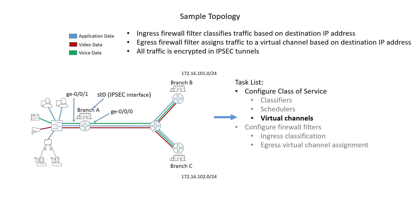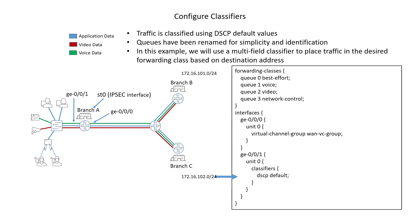In most environments, you can classify traffic based on the default behavior aggregate classifiers as shown on the screen. We're using the DSCP default classification based on the bit combination of the DSCP standard. This is applied to the incoming interface that connects to the branch A clients. Although we have this in place, we're using an input firewall filter for multi-field classification. Something we did do was rename our forwarding classes to give them names that are more intuitive for our environment.